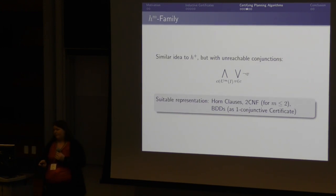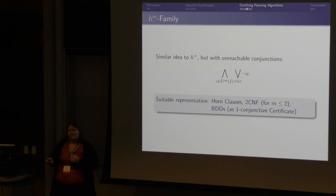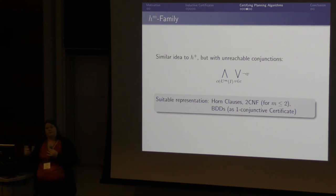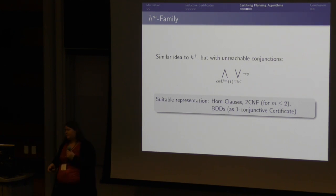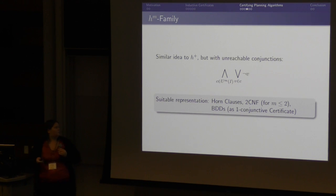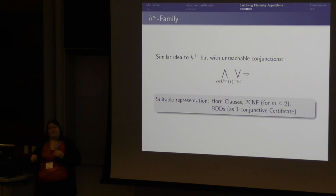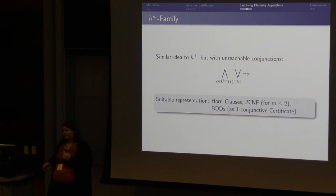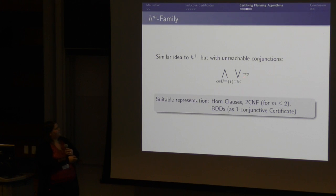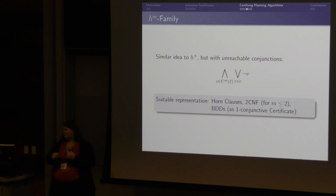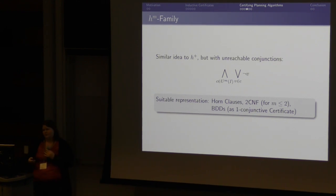For the HM family, the idea is very similar, except we need to consider unreachable conjunctions rather than just atoms. The formula looks like this — it is a Horn clause or 2CNF formula, but we cannot represent it compactly in one BDD. However, you can take these disjunctions, build several BDDs with just these disjunctions, and use it as a conjunctive certificate.